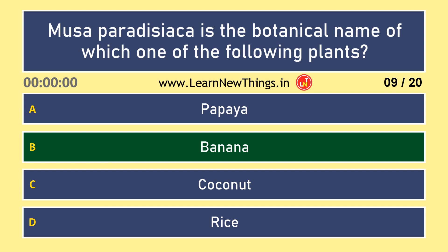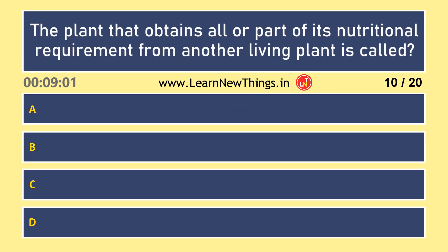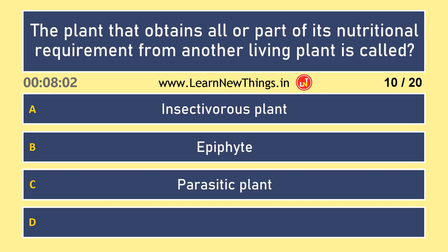The plant that obtains all or part of its nutritional requirement from another living plant is called a parasitic plant.